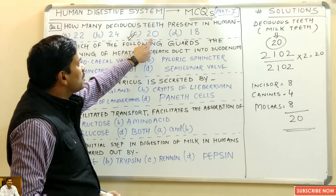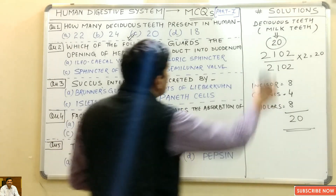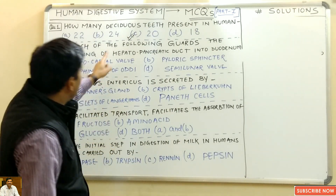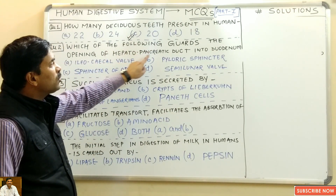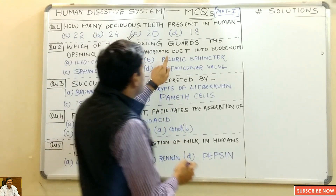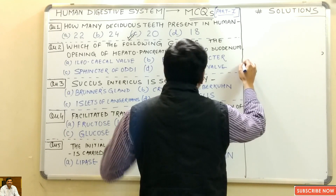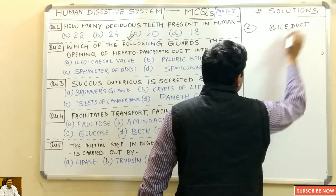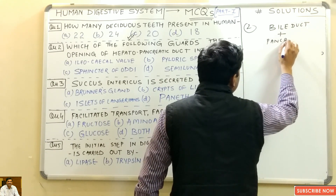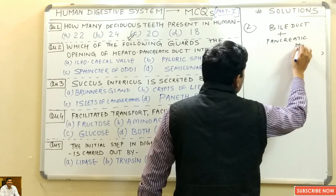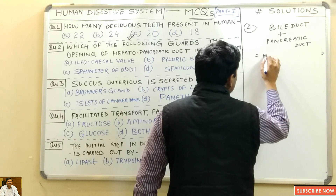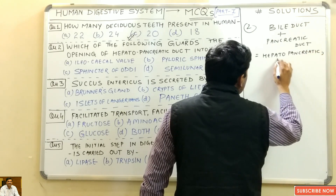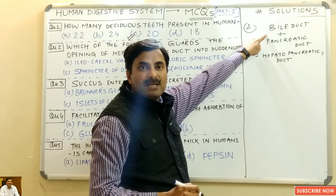Now the second question: which of the following guards the opening of the hepatopancreatic duct into the duodenum? First, you must know how the hepatopancreatic duct is formed. Bile duct plus pancreatic duct equals the hepatopancreatic duct. The bile duct brings bile juice and the pancreatic duct brings pancreatic juice.